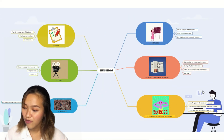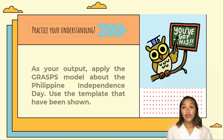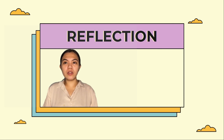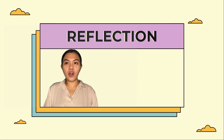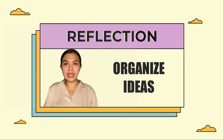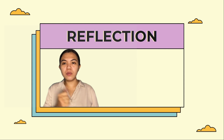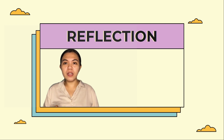Always remember that to make it more effective, always include real-world problems to solve. As your output, apply the GRASPS model about the Philippine Independence Day. Use the template shown in this lecture to guide you. Throughout the lesson, we have learned that the GRASPS model is indeed useful to systemize the performance task prepared for learners. It is very helpful to teachers having difficulties in making such tasks. Through this, learners can easily organize their ideas and follow the instructions of the performance task well.